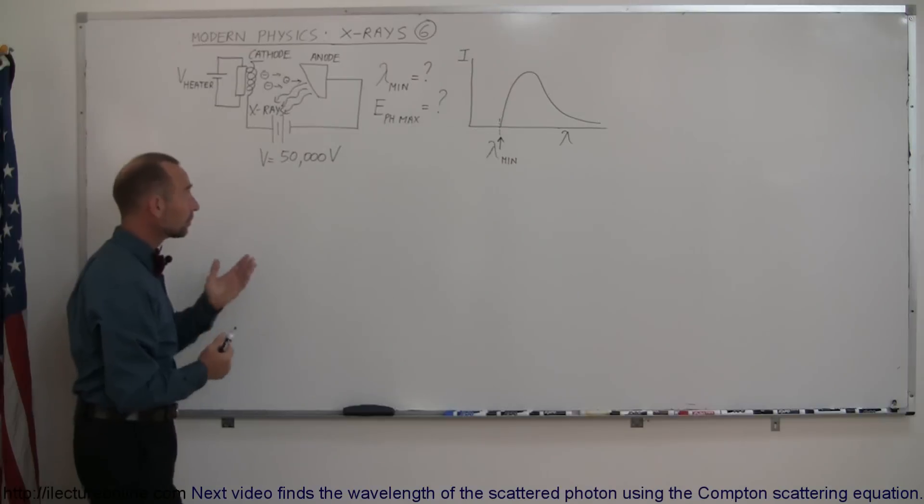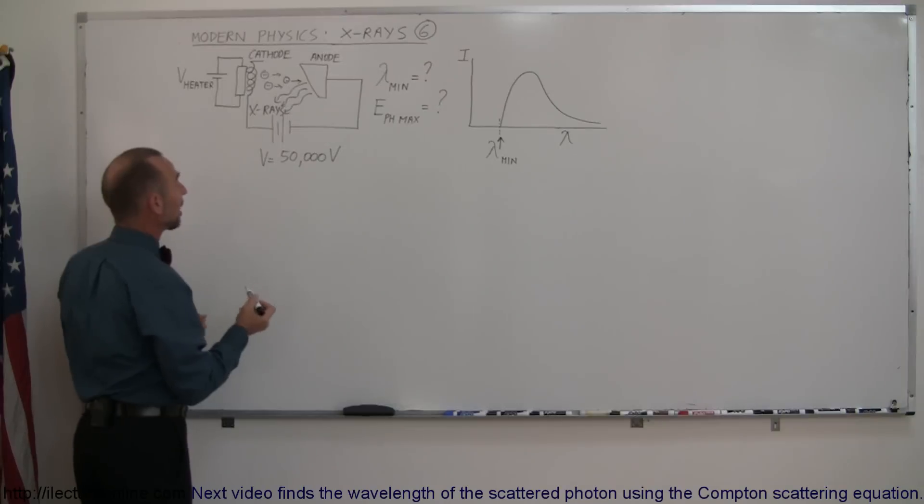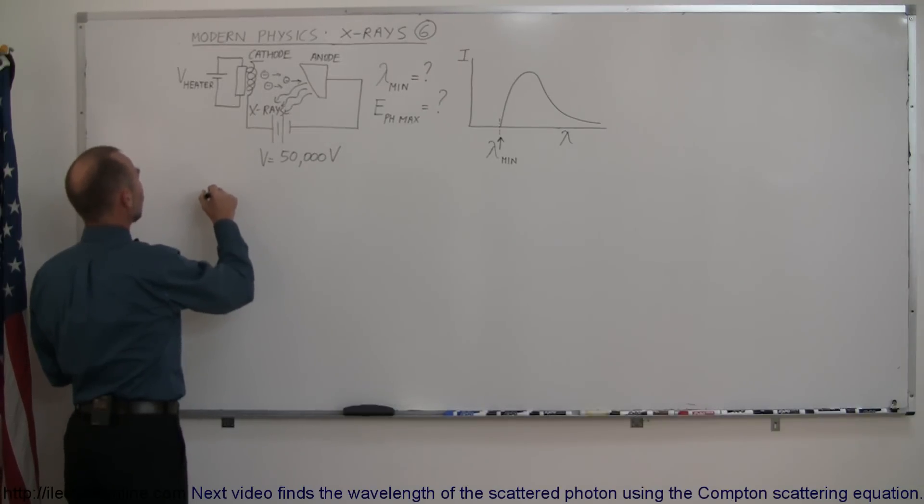So how do we do that? Well first of all we want to find the minimum wavelength. And so what we can do first is find the energy of the electrons.